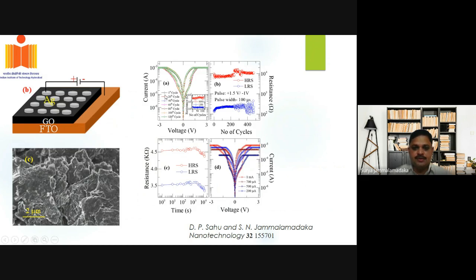As you can see from this picture, analog switching is evident, which is very much essential for neuromorphic computing. We also tried to show the endurance and retentivity characteristics. The endurance up to more than 400 cycles we could obtain, and the retentivity we could show up to 10 to the power 4 seconds.